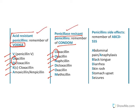The major side effects of penicillins are abdominal pain, anaphylaxis or hypersensitivity, black tongue, diarrhea, skin rash, stomach upset, and seizures. When penicillin enters the CNS it may cause seizures.